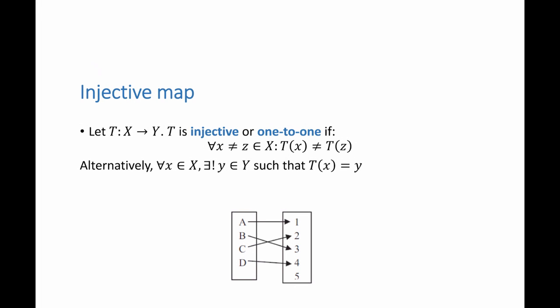The formal definition of an injective map is as follows. If t is a map from x to y, t is injective or one to one if for every x and z that are not the same in x, their images t of x and t of z are not equal.